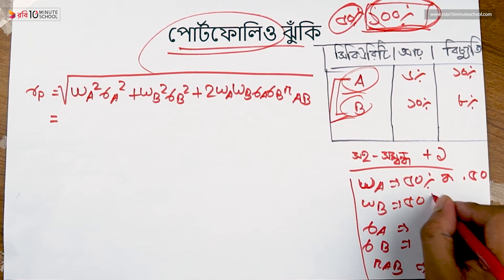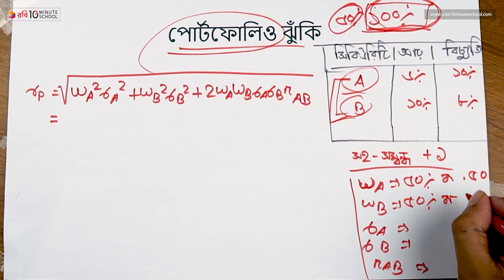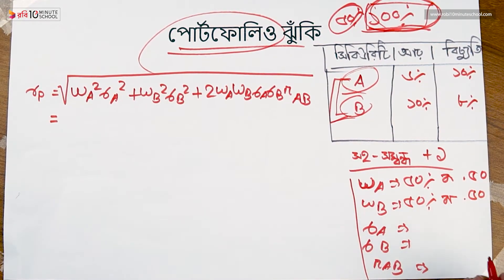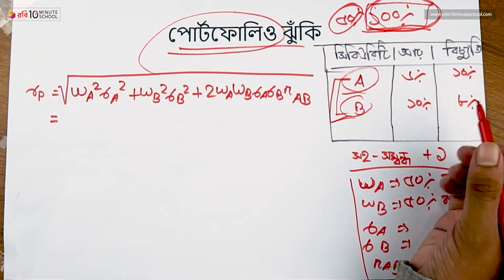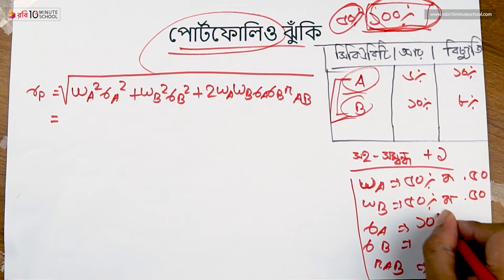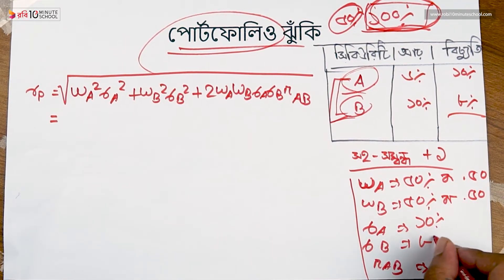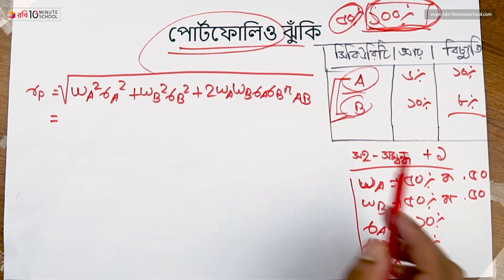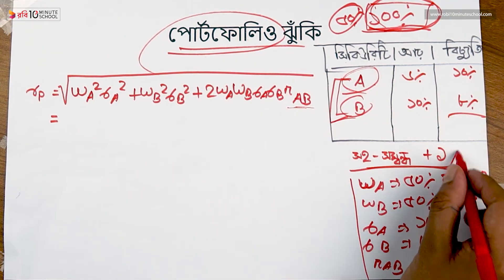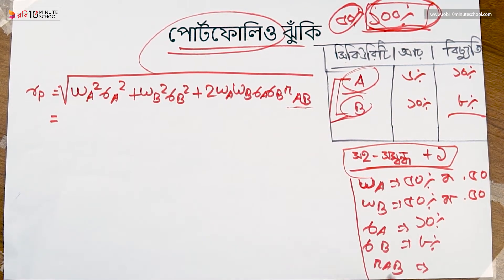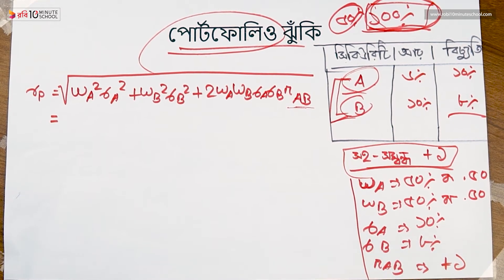Let's see: the weight is 0.25... sigma of A with sigma of security A is 10 percent. Sigma of B is 8%, so 8% for B. The correlation data — the correlation is plus one.